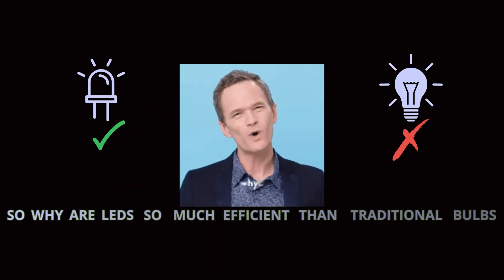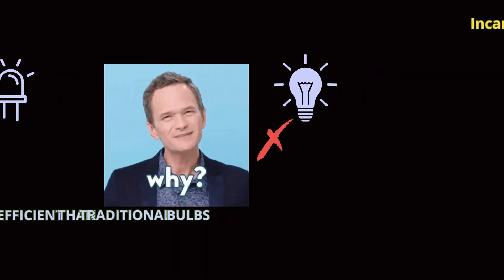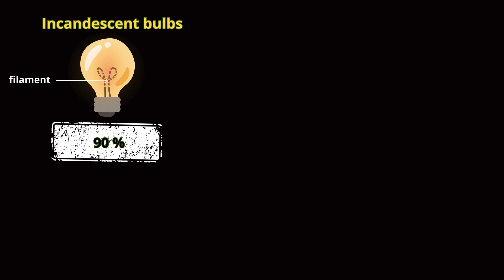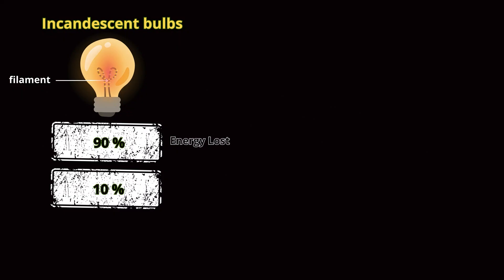So why are LEDs so much more efficient than traditional bulbs? Incandescent bulbs waste a lot of energy as heat because they work by heating a filament until it glows. In fact, around 90% of energy in an incandescent bulb is lost as heat, and only about 10% becomes visible light.